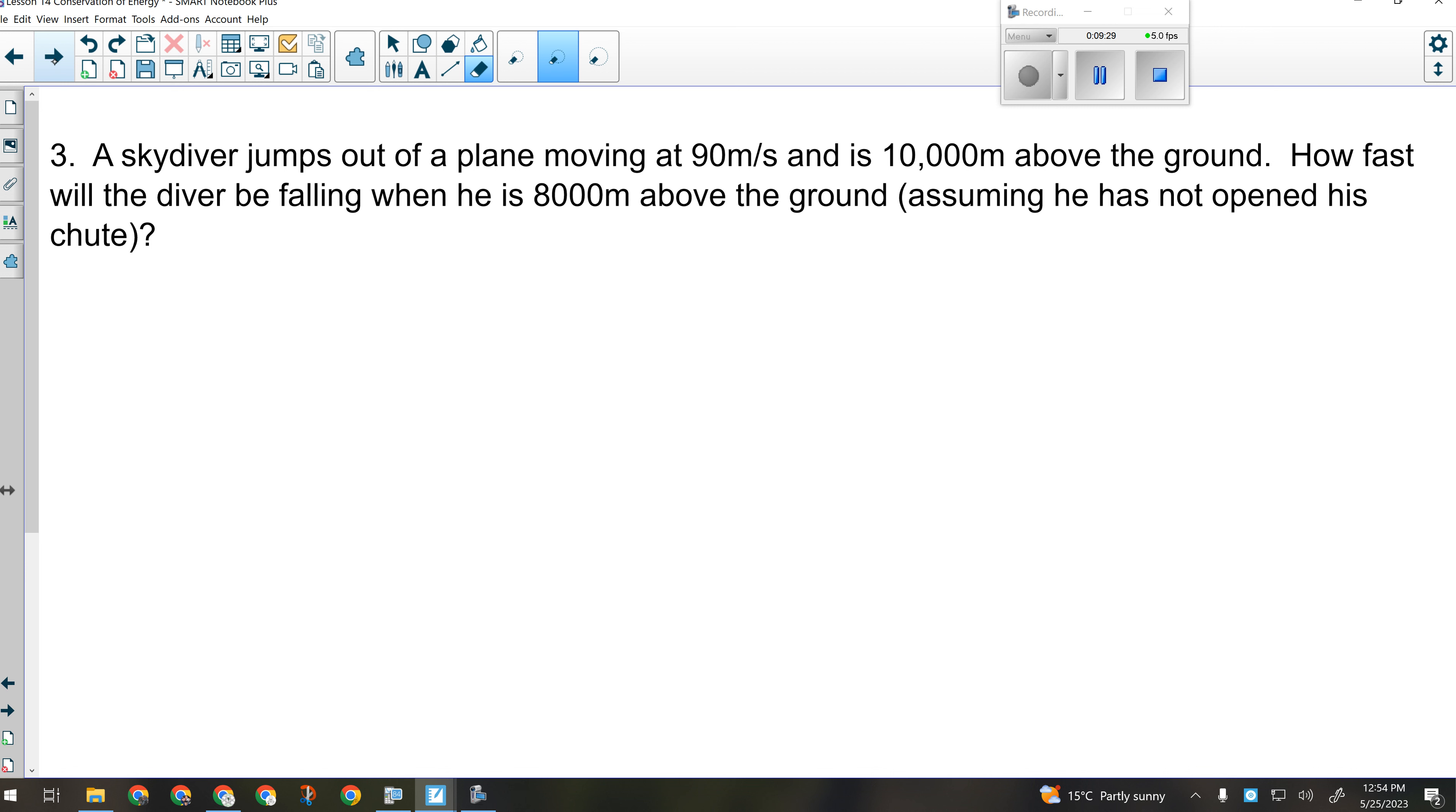Let's try that one. And then we'll take a little break. So a skydiver jumps out of a plane moving at 90 meters per second. So that would be their initial speed. Because that's when they jumped out of a perfectly good airplane. And they are 10,000 meters above the ground. That would be my initial height. 10,000 meters. How fast will the diver be falling when he is 8,000 meters above the ground? So that would be my final height.